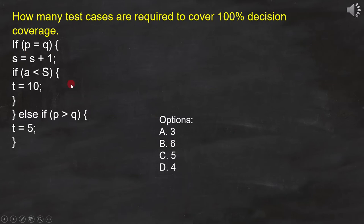To do that, let's first analyze the code and draw the flowchart. The first line is if p equals q. Since this is a condition, we will represent it like this.